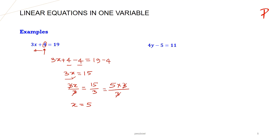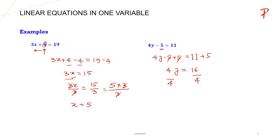Let us take another example: 4y-5=11. On the left hand side, we have variable y with minus 5. To isolate the variable, we add 5 to both sides: 4y-5+5=11+5. The +5 and -5 cancel each other, giving 4y=16. Now to find the value of y, we divide both sides by 4: 4y/4=16/4. The 4s cancel, and 16 divided by 4 equals 4, so y=4.